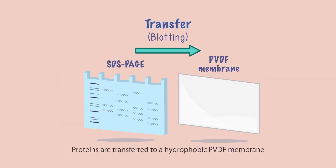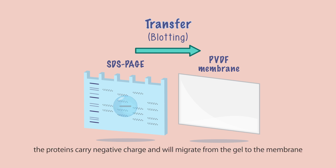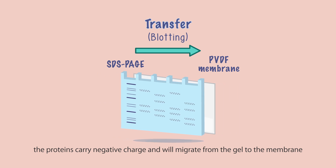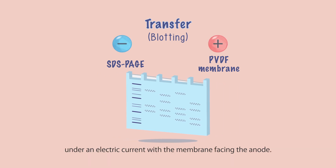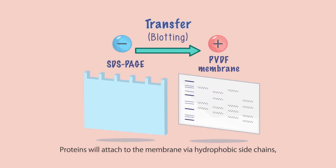Proteins are transferred to a hydrophobic PVDF membrane to increase interactions with antibodies. Due to the interaction with SDS in gel electrophoresis, the proteins carry negative charge and will migrate from the gel to the membrane under an electric current, with the membrane facing the anode. Proteins will attach to the membrane via hydrophobic side chains, completing the blotting process.